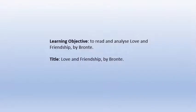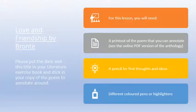The learning objective today is to read and analyze 'Love and Friendship' by Bronte. As ever, don't write in the learning objective, just write in the title: 'Love and Friendship' by Bronte. I expect you've spotted the pattern for these lessons — they're quite rigidly laid out. For this lesson you're going to need a printout of the poem, which I'll have attached to the class charts, a pencil, and different colored pens and highlighters for your annotations.